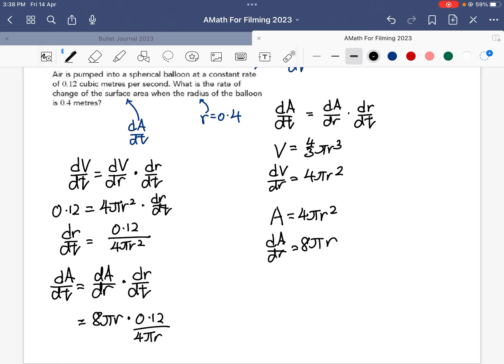dr/dt we found above is 0.12 over 4πr². If I simplify everything, what I get is 0.24 divided by r.